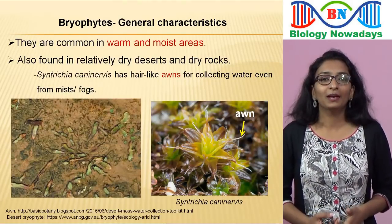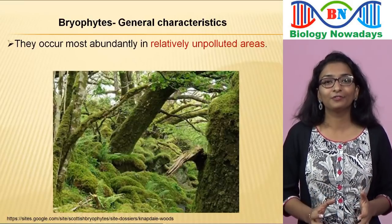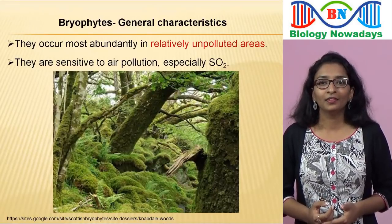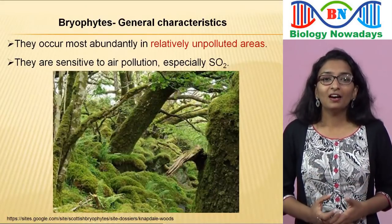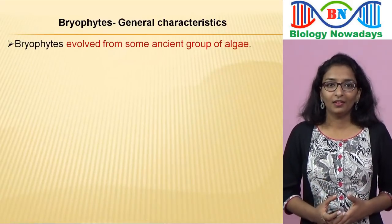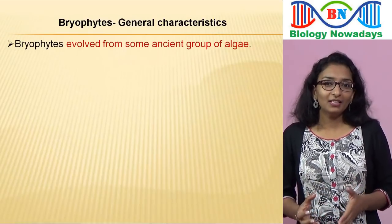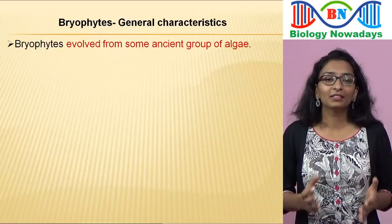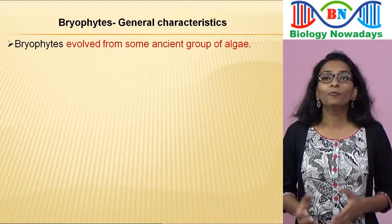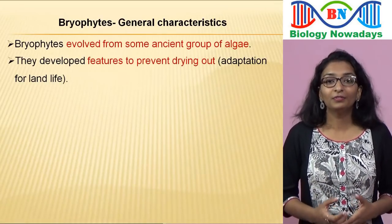Bryophytes occur most abundantly in relatively unpolluted areas. They are sensitive to air pollution, especially sulphur dioxide. Bryophytes are believed to have evolved from some ancient group of algae. We already learned that algae are mainly aquatic, whereas bryophytes are the simplest land plants. During the transition from water to land, bryophytes developed features that prevented them from drying out.